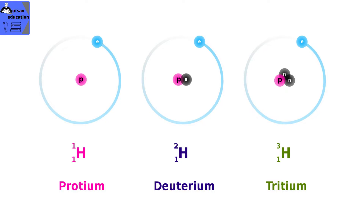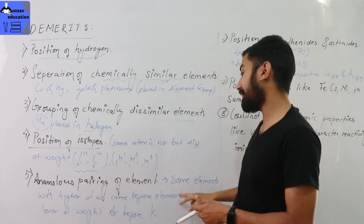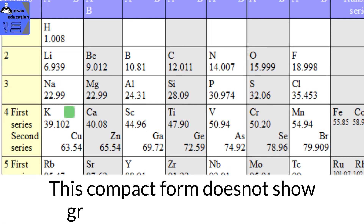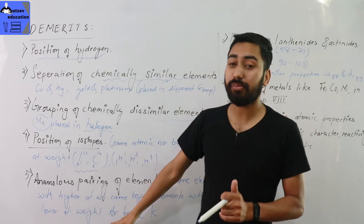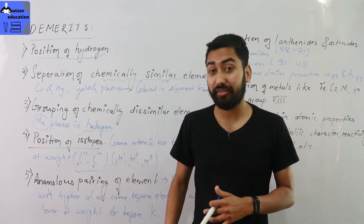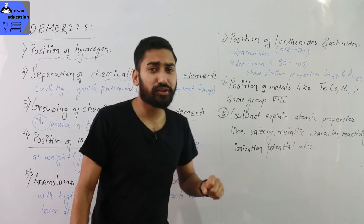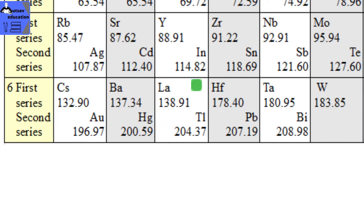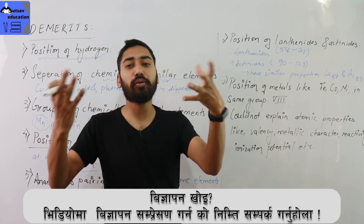Another demerit is the anomalous pairs of elements — some elements with higher atomic weight came before elements with lower atomic weight. For example, Argon comes before Potassium even though Argon has higher atomic mass. Also, the position of Lanthanides (atomic numbers 58–71) and Actinides (starting from Actinium, atomic number 89) is not clearly defined in Mendeleev's Periodic Table.